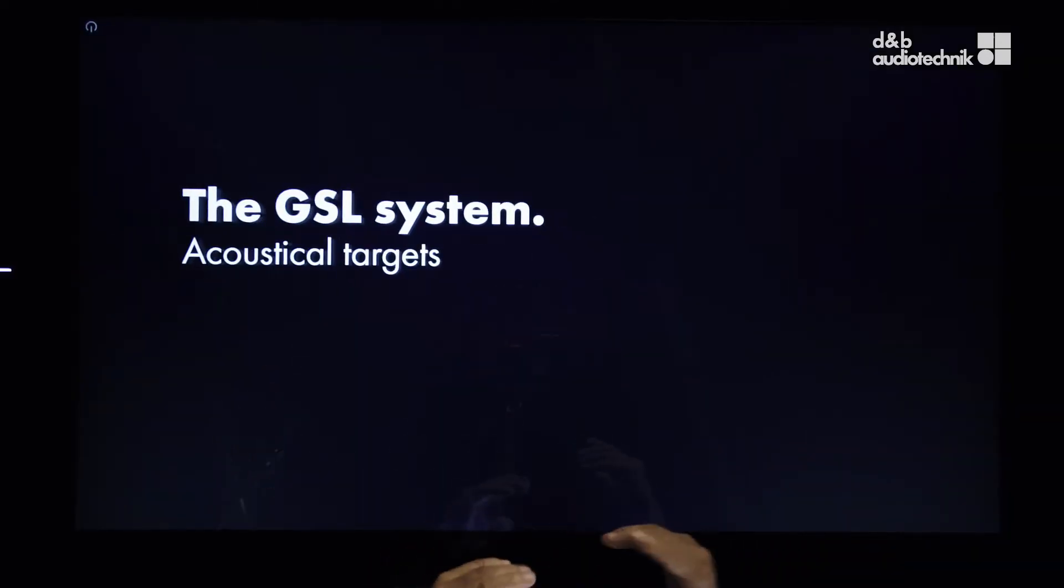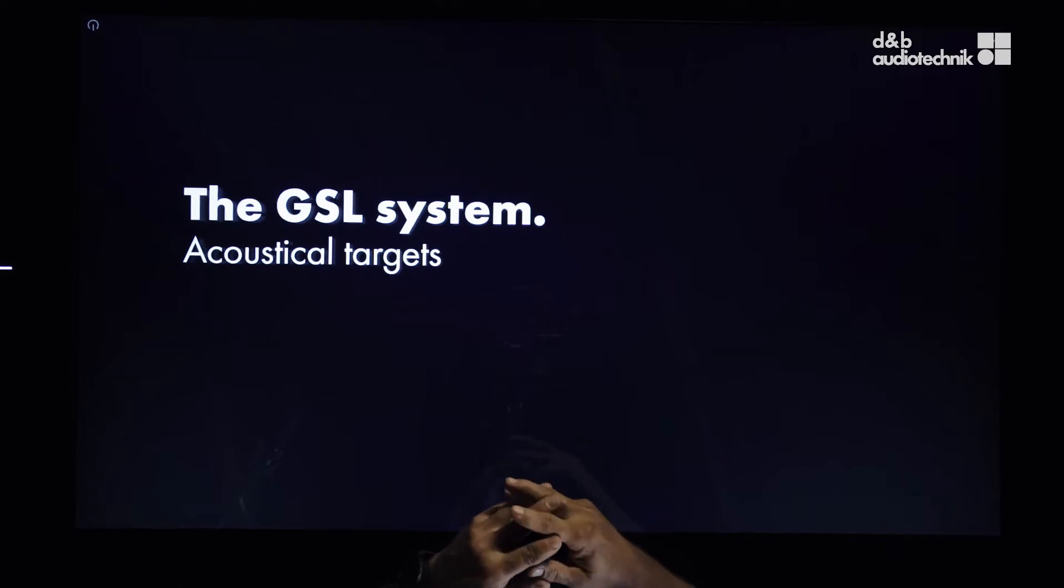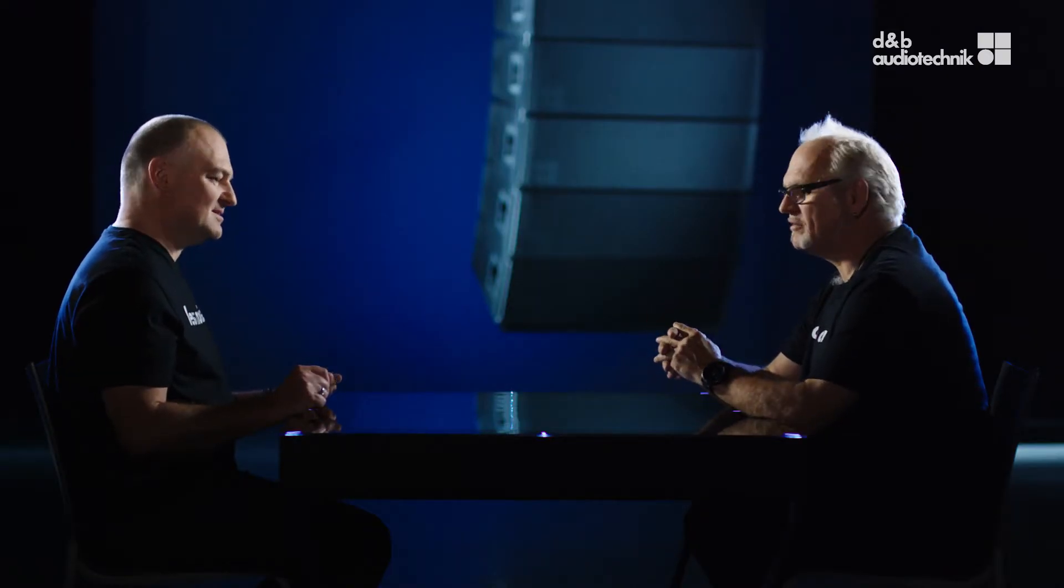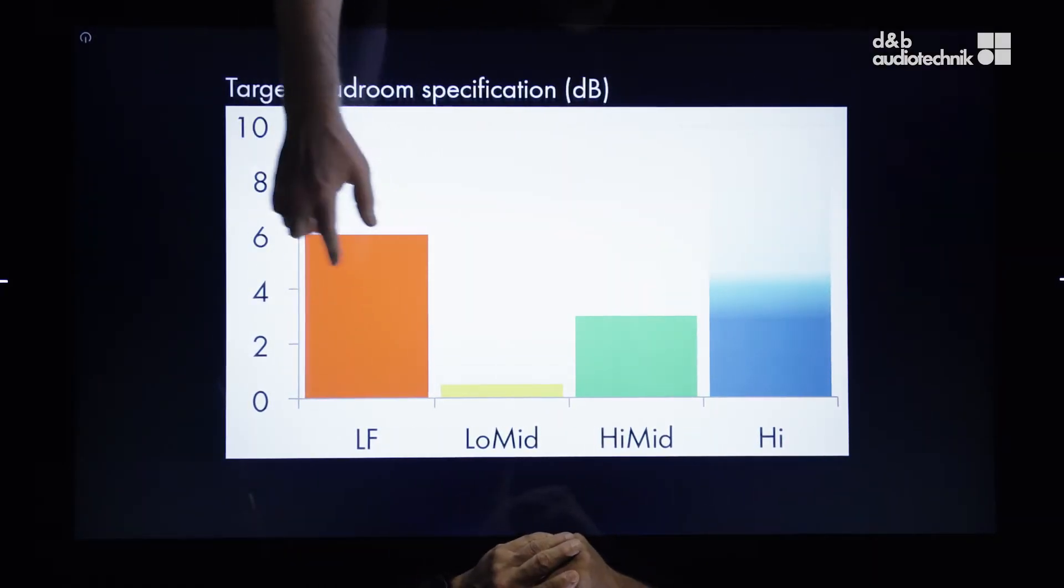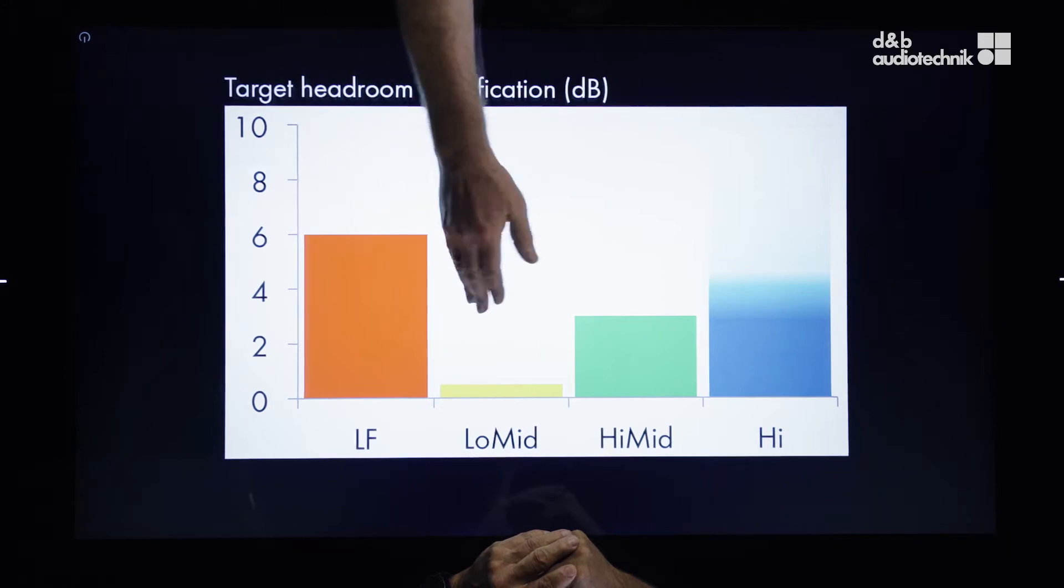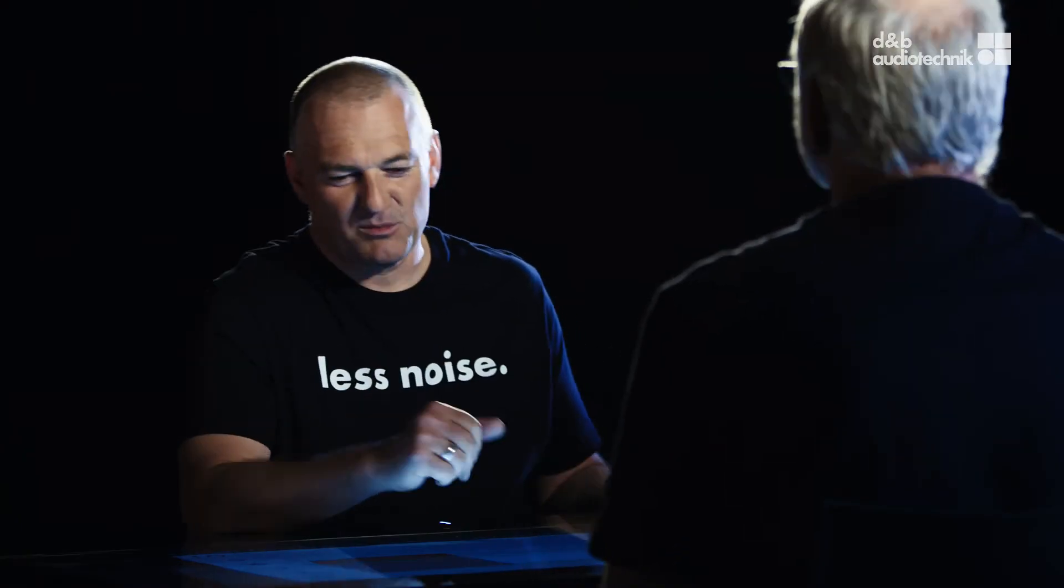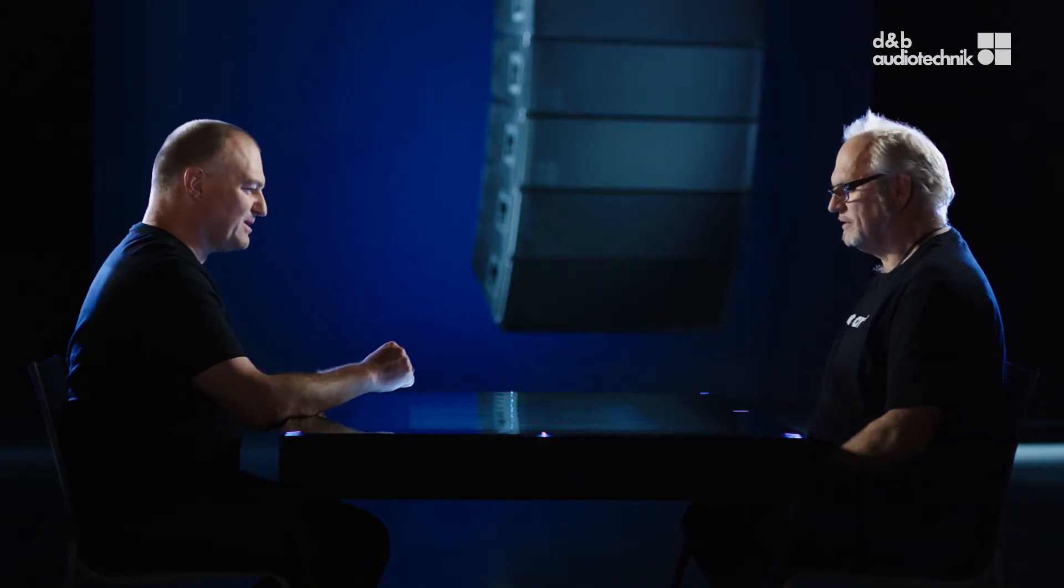So the GSL systems, let's talk about acoustical targets in terms of achievable headroom, achievable output and broadband directivity. The major requirement was to increase the low frequency headroom so we could state minimum 6 dB that's what we want to have, around 50 to 60 Hz in the low frequency range.